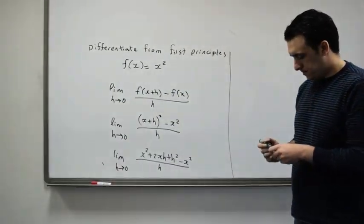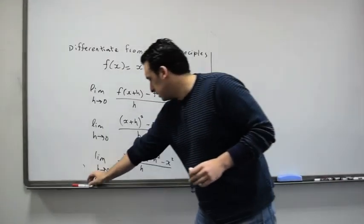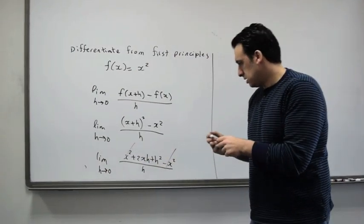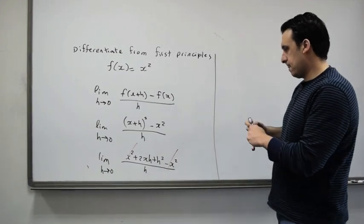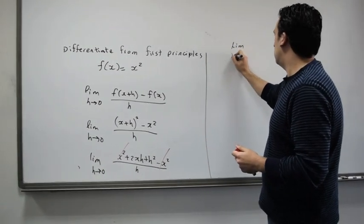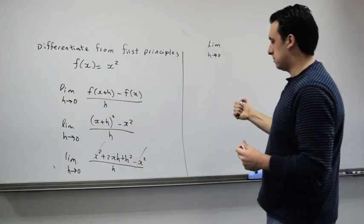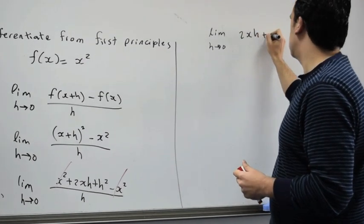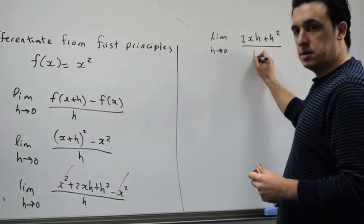Okay, next step—actually, before we stay here—you cancel this with this. Now you have the limit as h approaches 0 of 2xh plus h² divided by h.